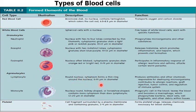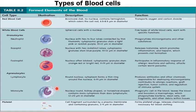Lymphocytes have a round nucleus and are 6 to 14 micrometers in diameter; they are produced in larger amounts during allergic reactions. Monocytes are 12 to 20 micrometers in diameter and have a round, kidney-shaped, or horseshoe-shaped nucleus. They contain more cytoplasm than lymphocytes and undergo phagocytosis, killing microorganisms by engulfing them.